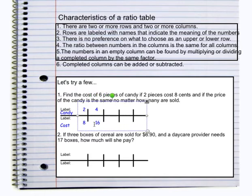And in order for me to get from eight to 16, again, I multiply by two. If I want to increase again, I want to know what is the cost of six pieces of candy? So six pieces of candy. Two times three will give me six. So eight times three would bring me to 24 cents.